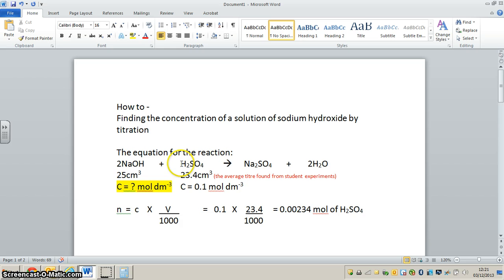Because there are one of these in the reaction and two of these in the reaction. So one mole of sulfuric acid reacts with two moles of sodium hydroxide, or 0.00234 moles of sulfuric acid reacts with 0.00468 moles of sodium hydroxide, which is twice this value.